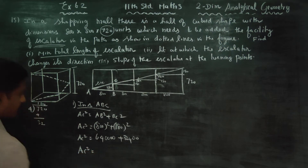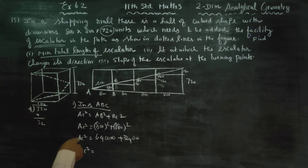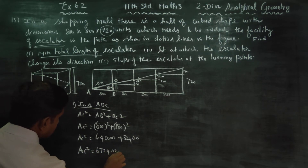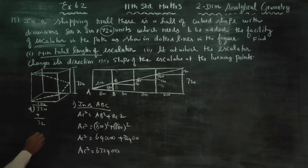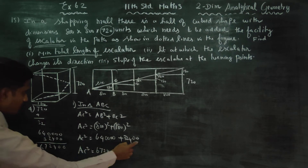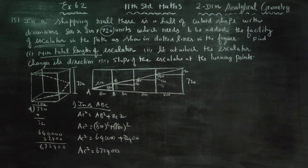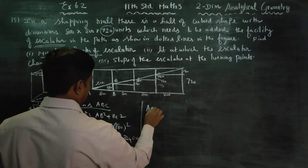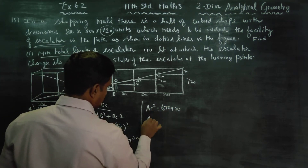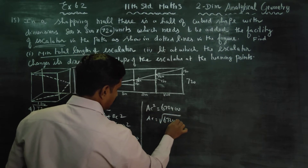AC² = 640,000 + 32,400 = 672,400. Therefore AC = √672,400. Taking the square root of 672,400 gives AC = 820 units.